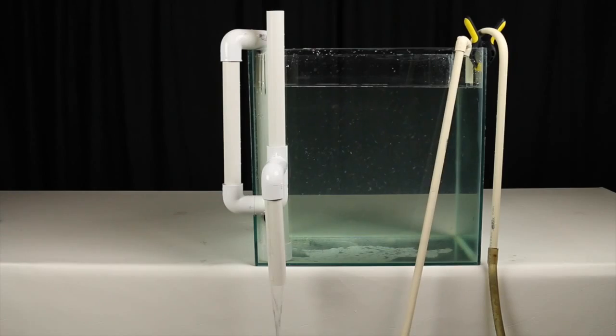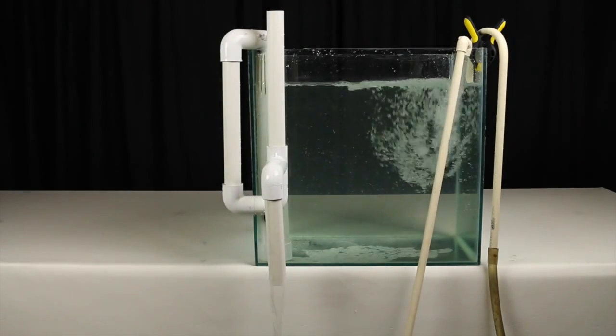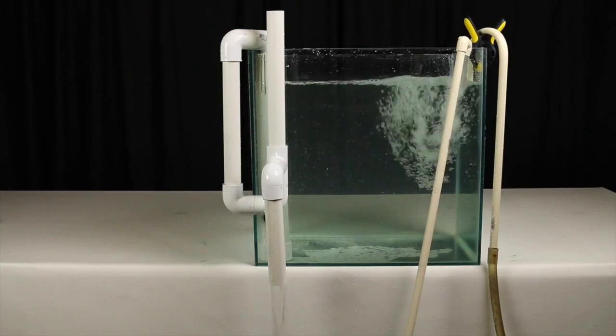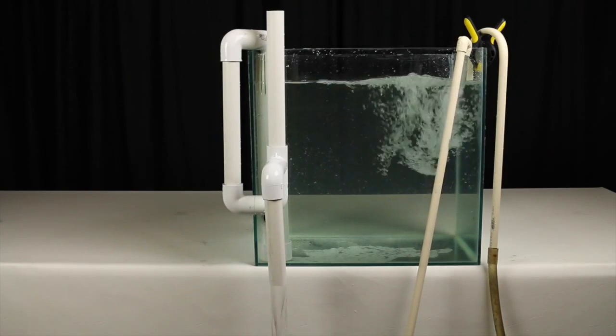To give you an example I started running 200 gallons per hour through this overflow. Then added another 400 gallons per hour for a total of 600 gallons per hour. The overflow handled it no problem.